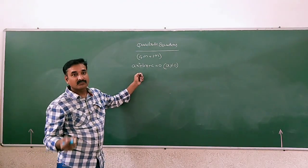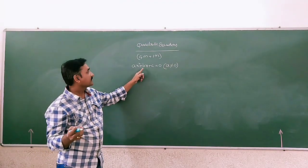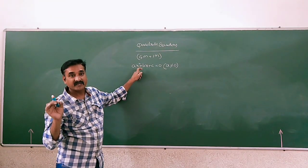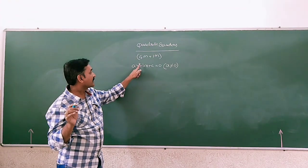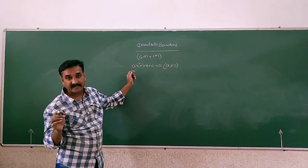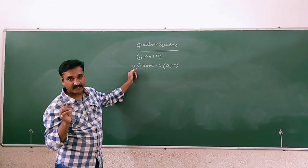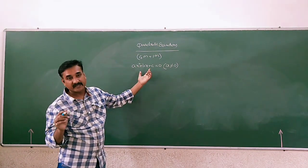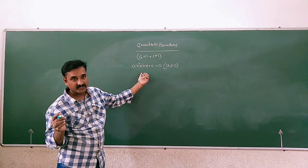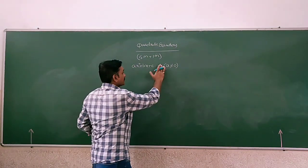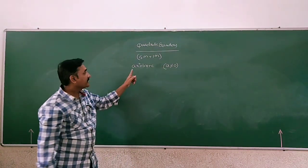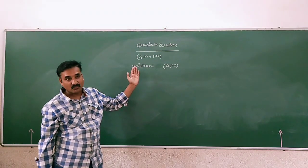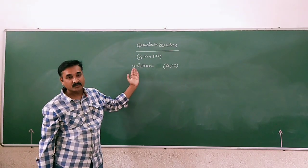What is the meaning of quadratic? Quadratic is nothing but an equation which has its highest power as 2. The highest power is nothing but the exponent of the quadratic equation. Since it has equals to 0, we call it a quadratic equation. If it is simply written as Ax² plus Bx plus C, then it is called a quadratic polynomial.